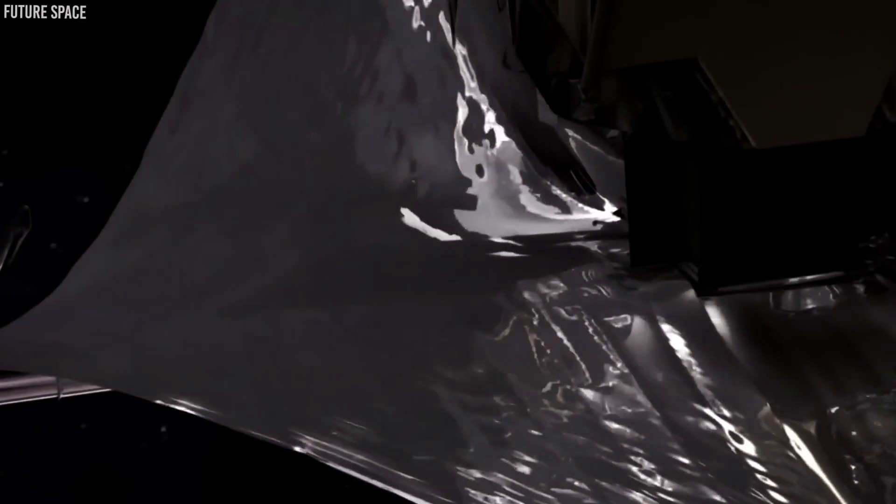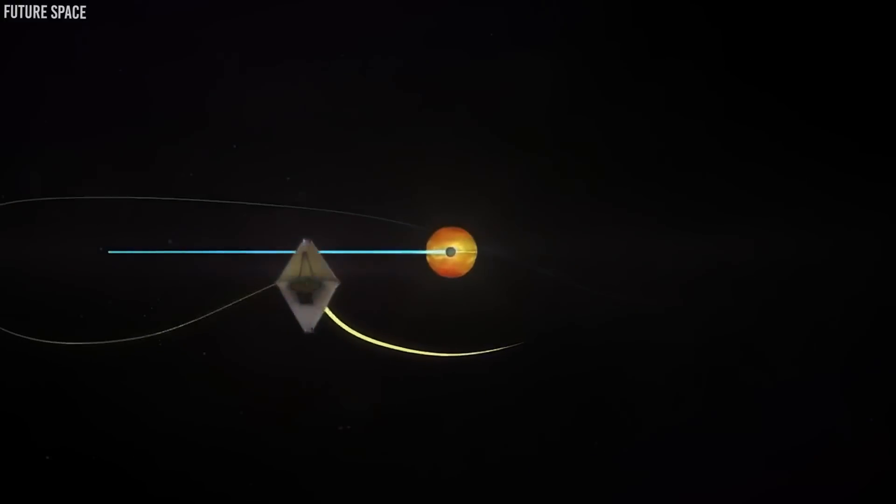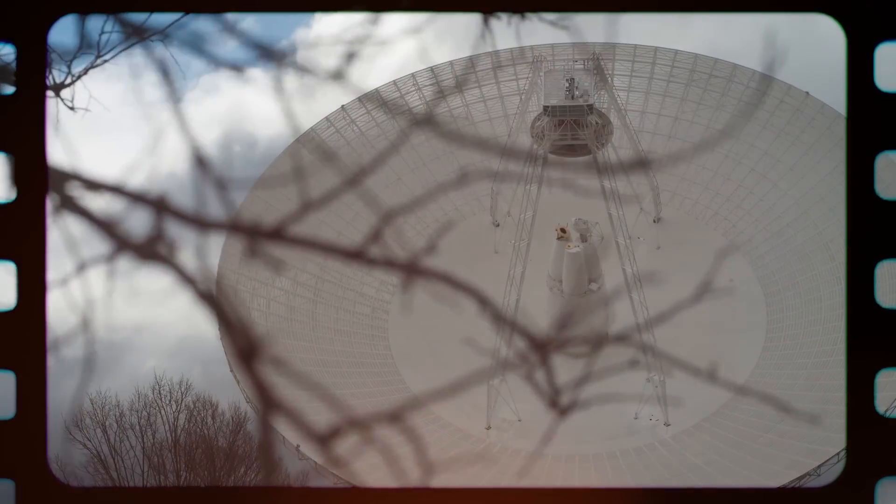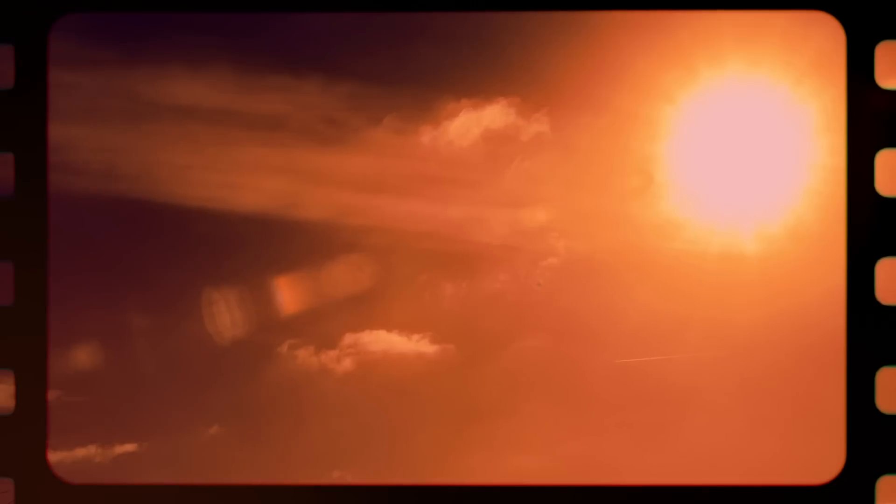This icy environment might sound like a challenge, but it's a strength for the JWST. How? Well, it's all thanks to a clever sun shield. This shield wraps around the telescope, guarding it from the sun's scorching heat and ensuring that its sensitive instruments stay frosty.